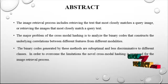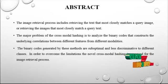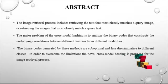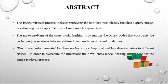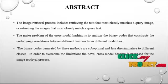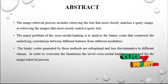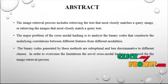The image retrieval process includes retrieving the text that most closely matches a query image, or retrieving the image that most closely matches a query text. It is shown that accounting for modal correlations and semantic abstractions both improve retrieval accuracies. These tasks are central to many applications such as finding on the web the picture that best illustrates a given text or story, and finding the text that best matches a given picture.